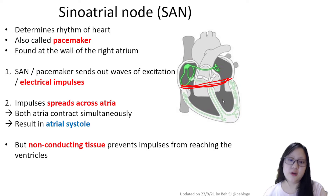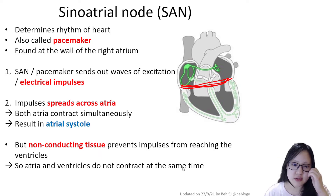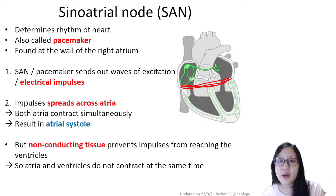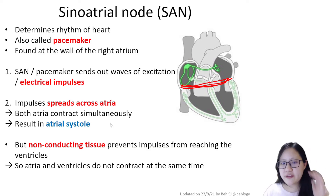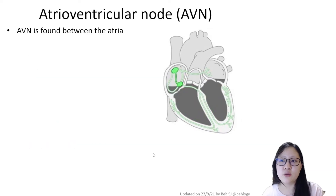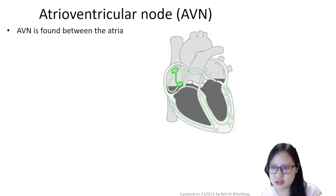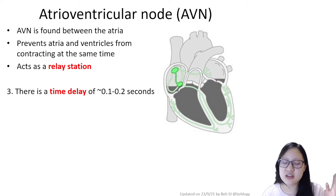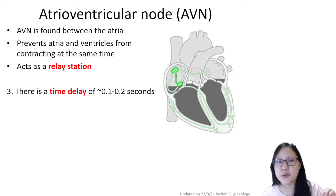This is important because the atria will not contract at the same time as the ventricles — it's atrial systole first, then ventricular systole afterwards. The only way the wave of excitation can spread is via the atrioventricular node. The electrical impulses pass through the AV node, which acts as a relay station because there is a time delay of 0.1 to 0.2 seconds, which is actually the length of the atrial systole.